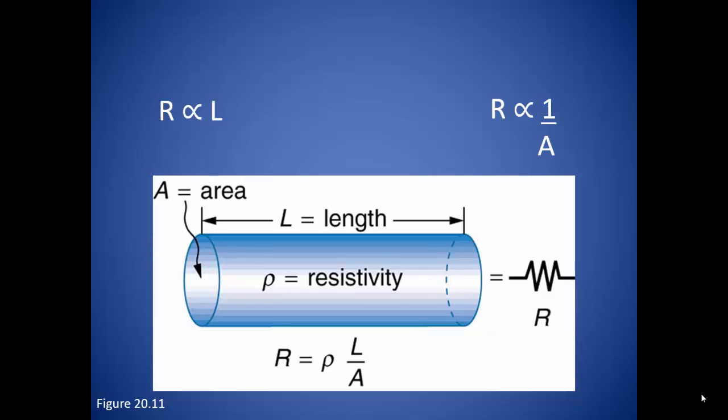The same thing happens to current moving through a wire. The larger the area, the less resistance to the flow of current. So resistance and area have an inverse relationship.